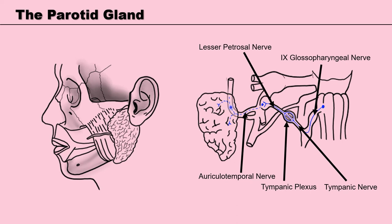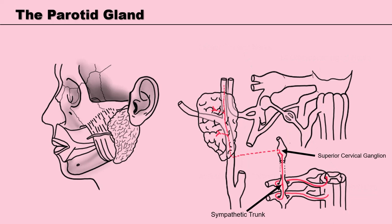You do not need to know all of the nerves mentioned, but what you do need to remember is that the preganglionic fibres for the parotid hitch a ride with the glossopharyngeal nerve, whilst the postganglionic fibres hitch a ride with the trigeminal nerve. The sympathetic innervation comes from the superior cervical ganglion, and signals travel within the endothelial tissues to the parotid gland, preventing the secretion of saliva.